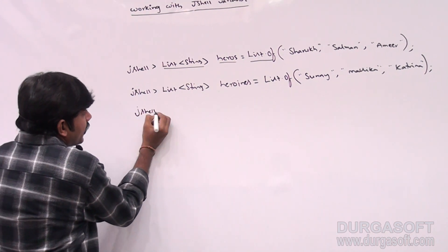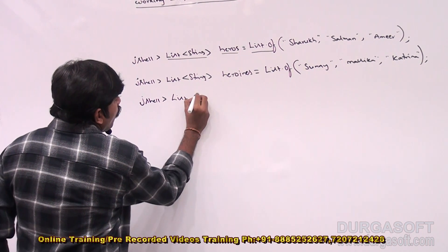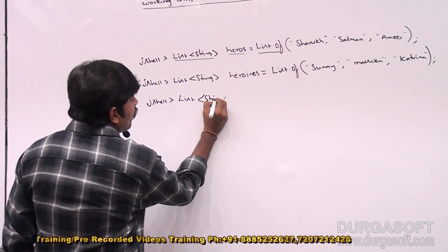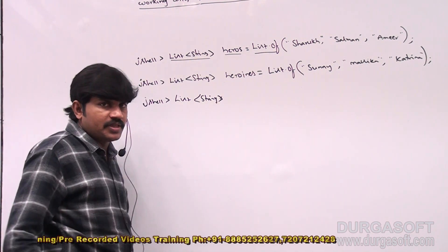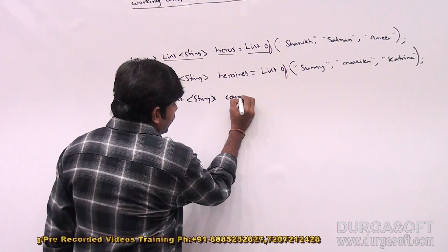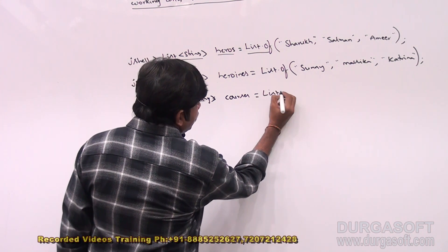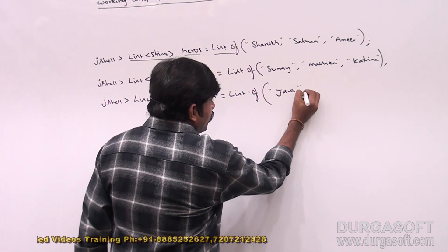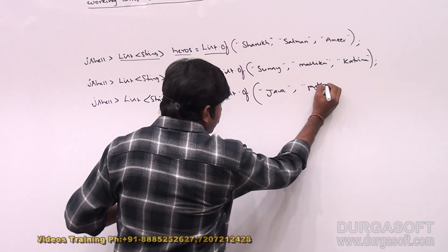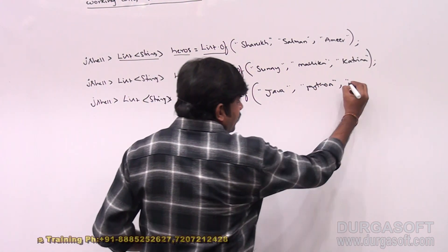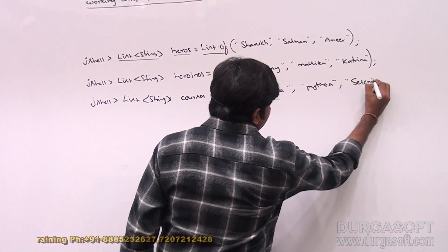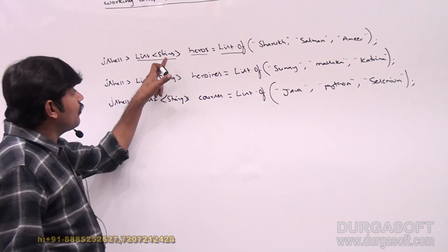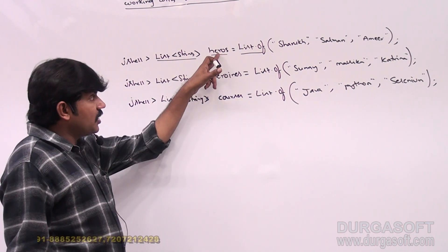Now I'm taking a list of courses. It is String type again because each course name is a string. List<String> courses = List.of() — I can take Java, Python, Selenium, like this. So the courses list is also created.